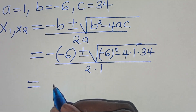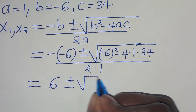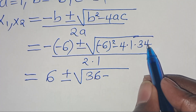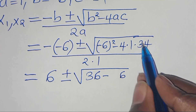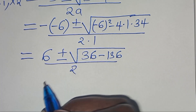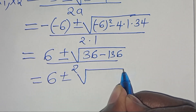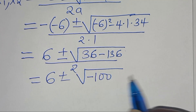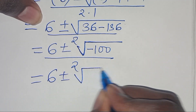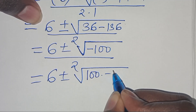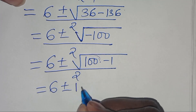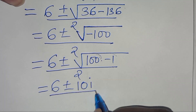Simplifying: 6 plus or minus the square root of 36 minus 136, divided by 2. That gives 6 plus or minus the square root of negative 100, divided by 2. We can express negative 100 as 100 times minus 1, so the square root of 100 is 10, and the square root of minus 1 is i, giving us 6 plus or minus 10i, divided by 2.